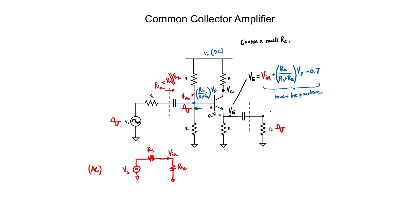Assuming the transistor is not in saturation, our load voltage is essentially the same as our emitter voltage, with the output capacitor blocking all DC and passing only the AC portion. We do have to consider the output impedance of our amplifier. Looking back into the circuit, we find an emitter resistor in parallel with whatever resistance the transistor gives us looking up into its emitter — that resistance tends to be very small, so we can neglect the output impedance.